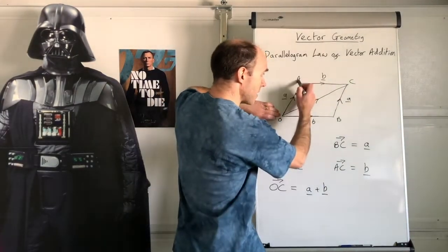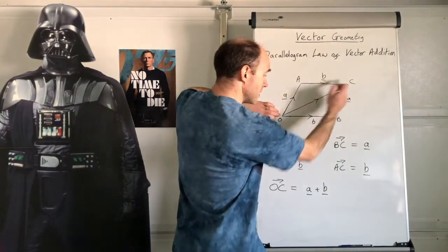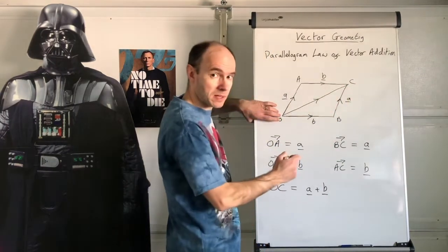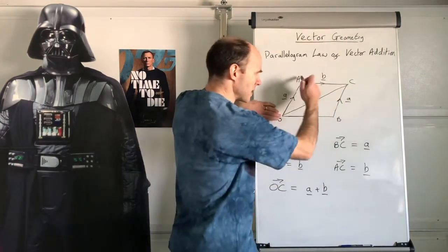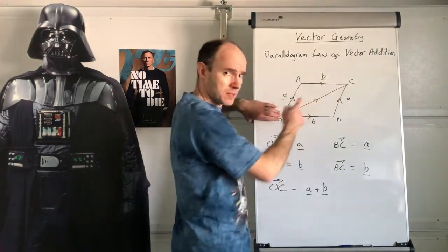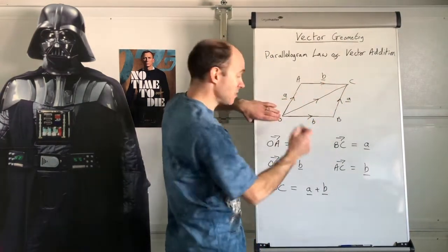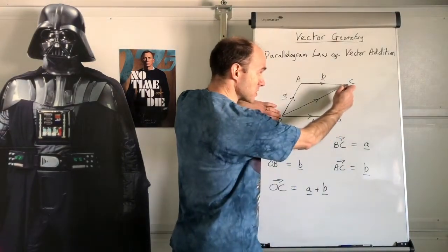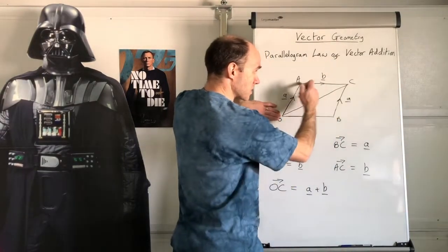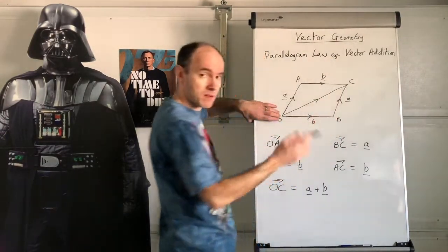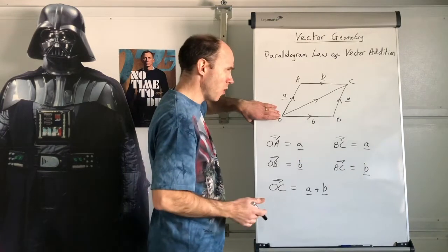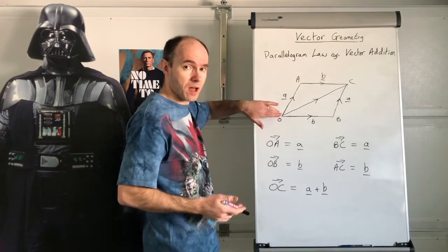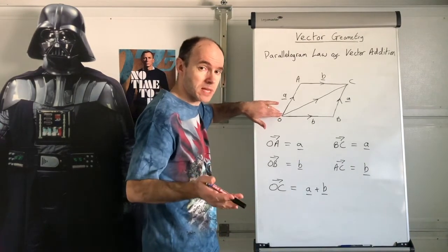It's more convenient to write it in alphabetical order: a plus b. That's the parallelogram law of vector addition. Basically, if that is a and that is b, then from there to there is a plus b. We add the other two sides — equal to those — and we have a parallelogram, hence the parallelogram law of vector addition.